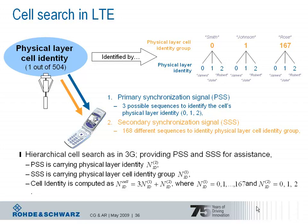As in wideband CDMA, LTE uses a hierarchical cell search procedure. The LTE radio cell is identified by a cell identity, comparable to the scrambling code used to separate base stations and cells in wideband CDMA. To avoid expensive and complicated network planning, the number of physical layer cell identities is 504 — sufficiently large.